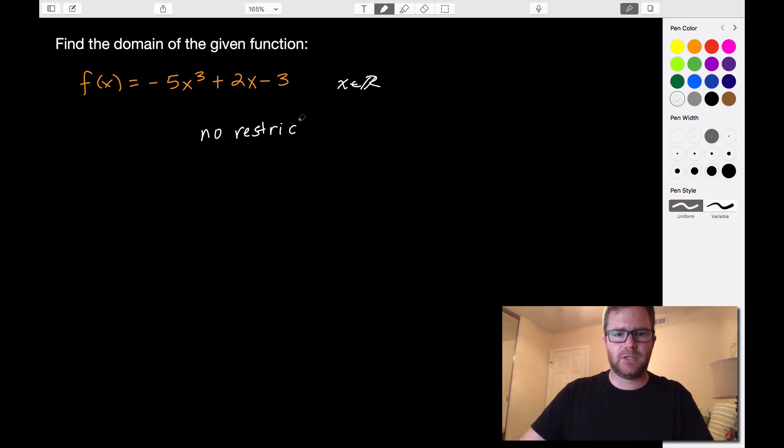And that's actually going to be the case for all polynomial functions. And when we have no restrictions on the input values we say that the domain is all real numbers. And so in set notation it would look like this.